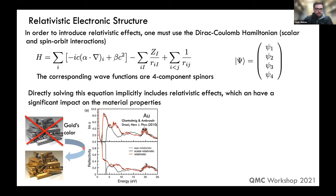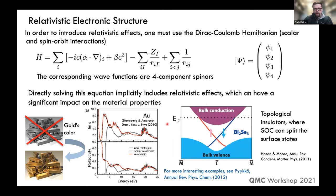Perhaps more interesting are recent studies in topological materials where spin-orbit can play an important role, for example in splitting surface states to generate topologically protected surface states. Spin-orbit and relativistic effects can generate interesting material properties. There's a review listed that has many other examples where relativity makes a huge difference.